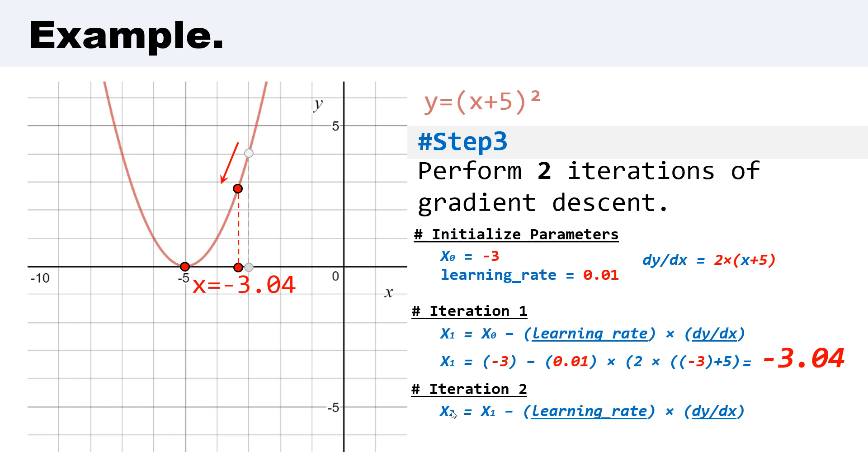We have x₂ (the second point in x-axis) equal to x₁ minus learning rate multiplied by the gradient. Put the values in correct places.